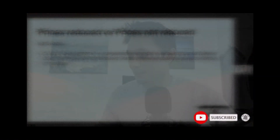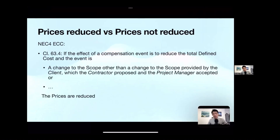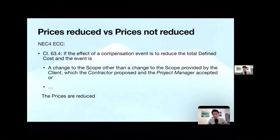Whether prices will be reduced or not reduced — I'm going to use Option C as an example. Why Option C? Because if you read these clauses and you are using Option C, you will get even more confused. So bear with me. I'm going to put up some of the relevant contract clauses on screen to break them down for explanation. The clauses are 63.3, 63.4, and for Option C, also clause 63.13.